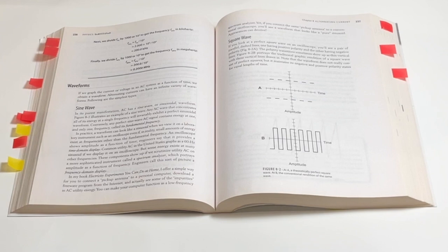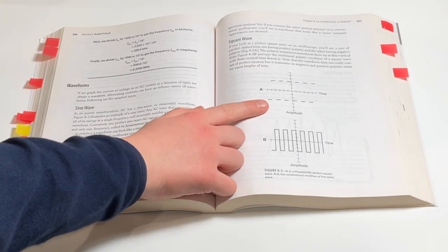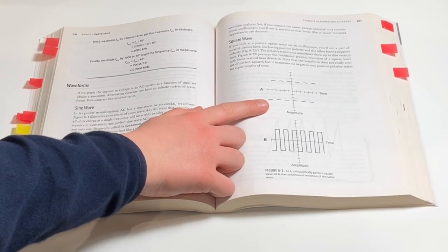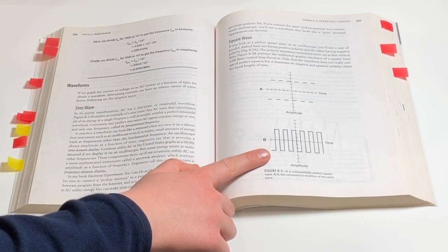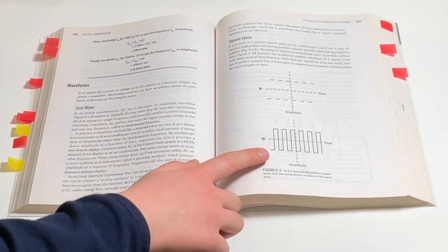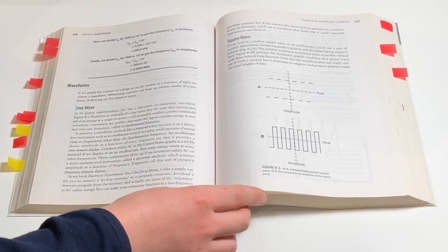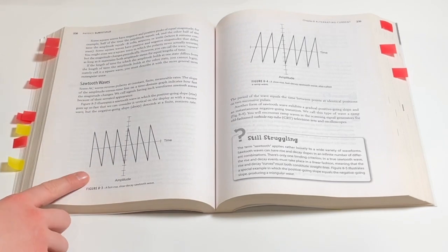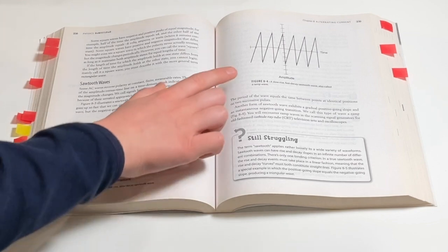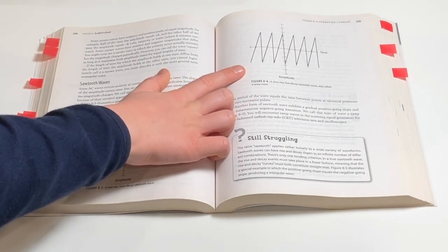If you open our physics textbook to the chapter on AC power you'll notice that AC power output comes in several very interesting waveforms including the square wave shown here, or the sawtooth wave like the fast rise slow decay or the slow rise fast decay.